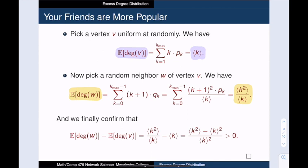When we take the difference of these two values, the numerator we get is actually the variance of the degree distribution. And the variance is non-zero, unless of course all of the vertices have the exact same degree. And this proves that the degree of a random vertex is smaller than the degree of a random neighbor of that vertex.